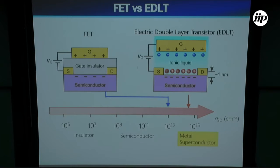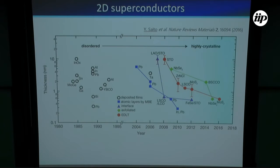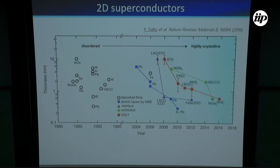This is a very good method to induce two-dimensional superconductors formed at the interface between liquid and solid. But this is not the only fabrication method to produce two-dimensional superconductors. Here is a summary of the history of 2D superconductors — the horizontal axis is thickness, and the vertical axis is the year the thin superconductors were achieved. The history of 2D superconductors is very old.